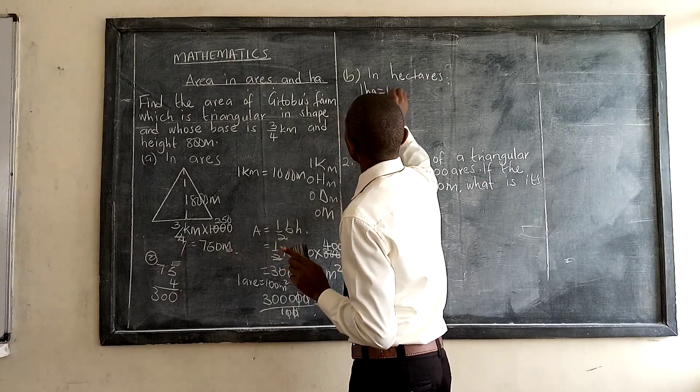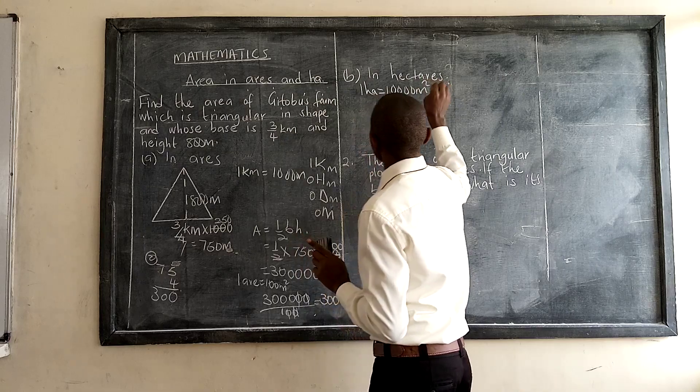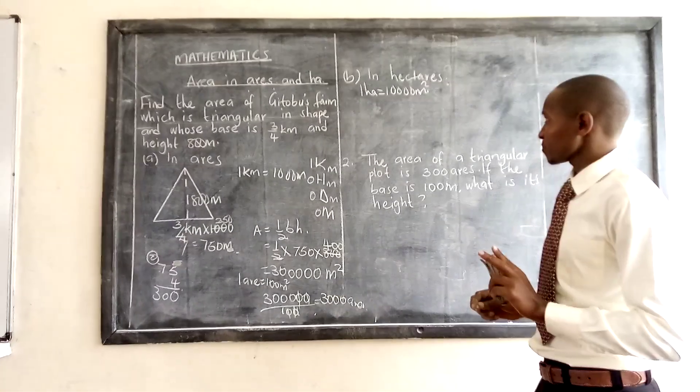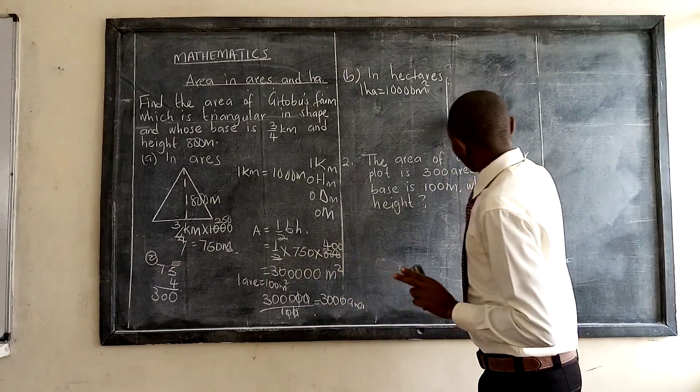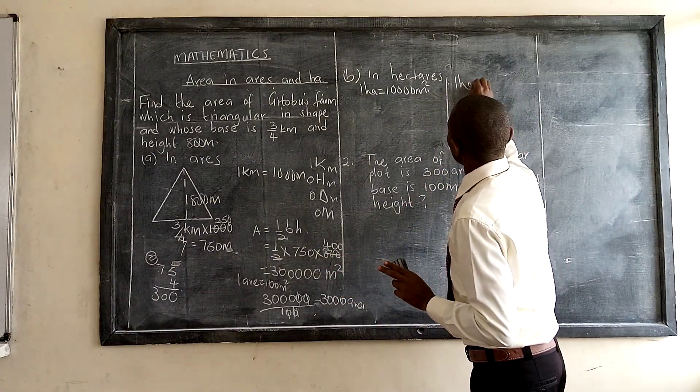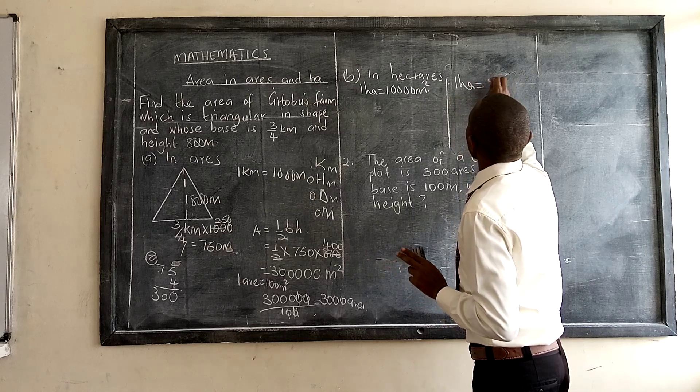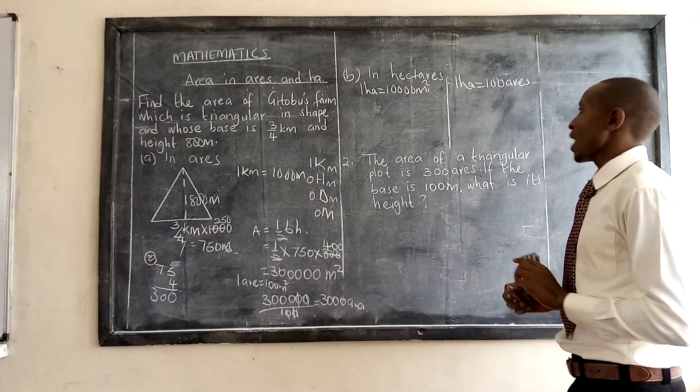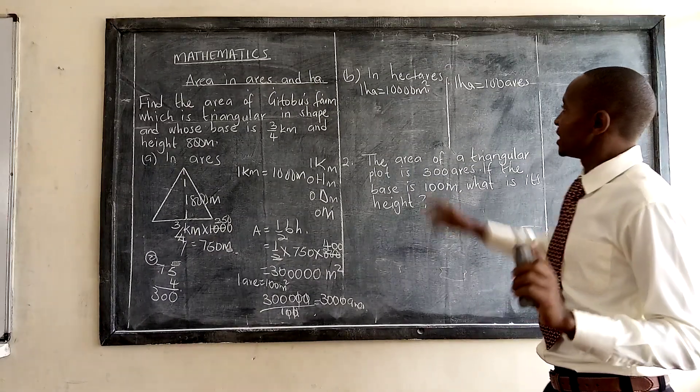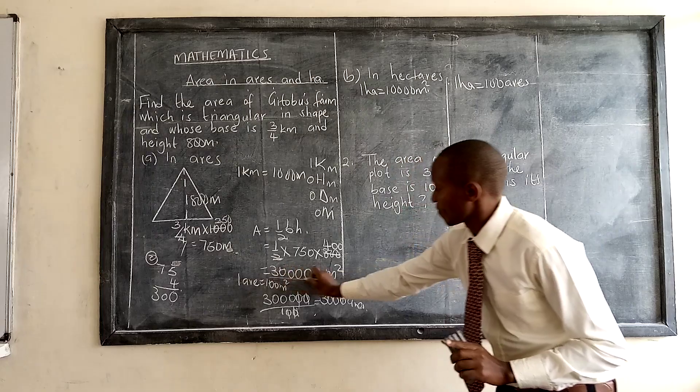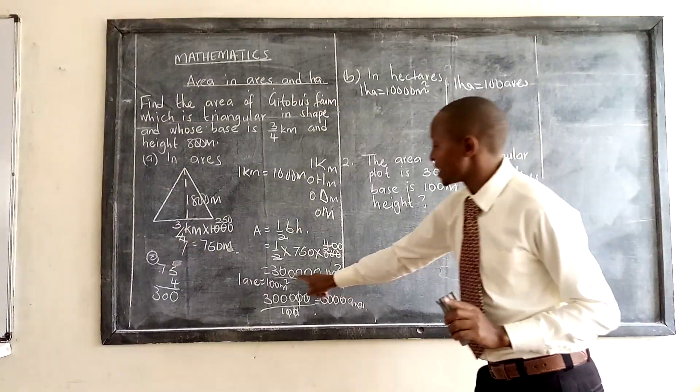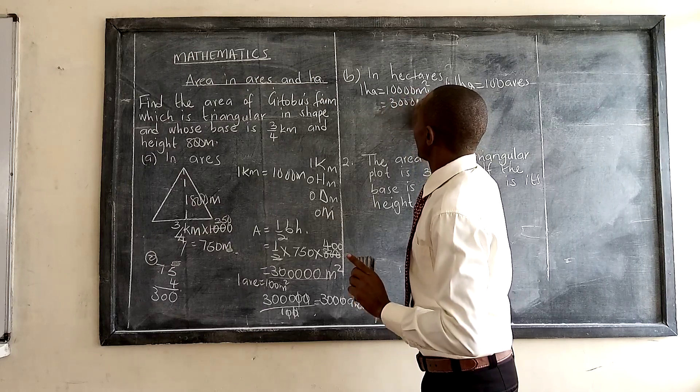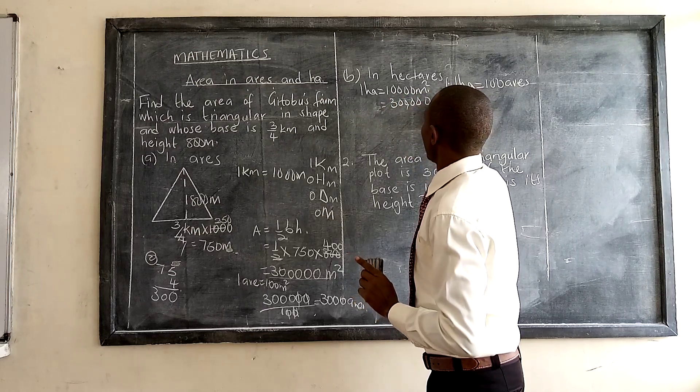Number one: we know that one hectare is equal to 10,000 square meters. Then we have two: we know that one hectare is equal to 100 airs.